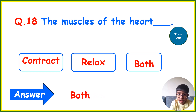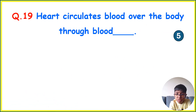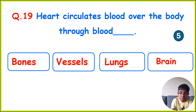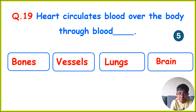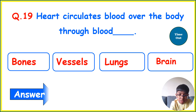Your next question is: The heart circulates blood over the body through blood — Bones, Vessels, Lungs, or Brain? Your time starts now. Your correct answer is Vessels.